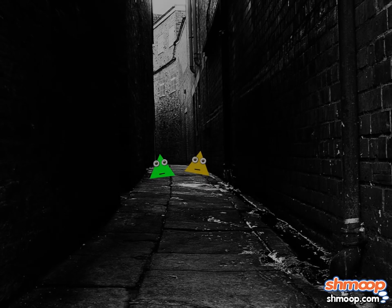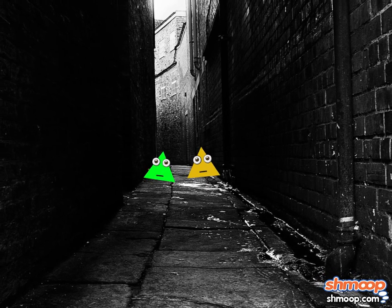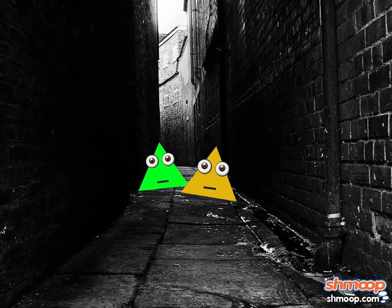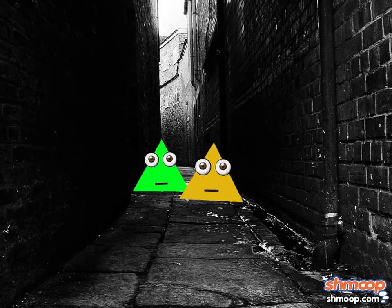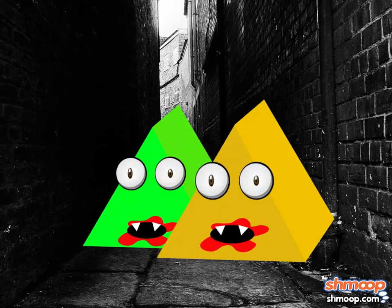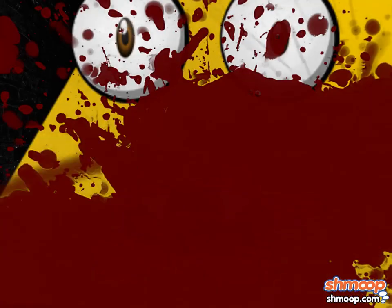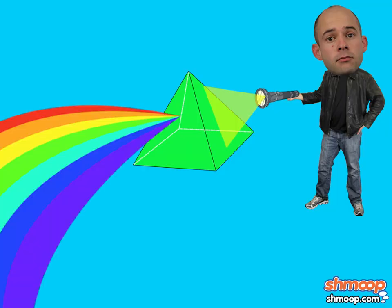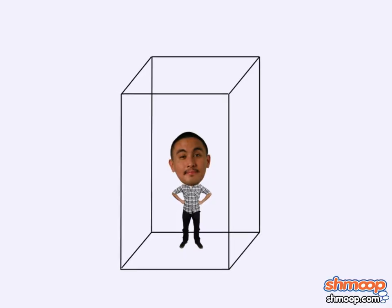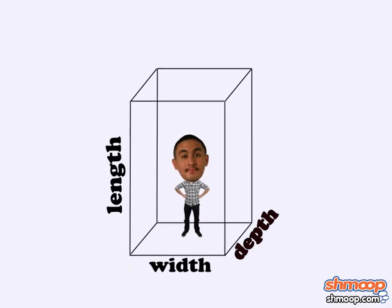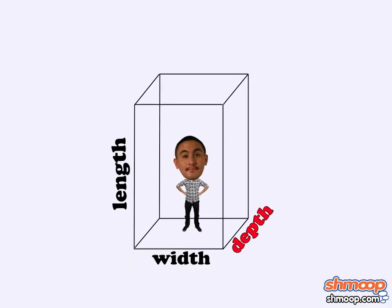Suddenly, there they are, those terrifying triangles. Only, they're not triangles anymore. They're prisms. Horrible, gory, flesh-eating prisms. Ever seen light refracted through those glass shapes to make a rainbow? 3D shapes have more than just length and width. They have depth, too.